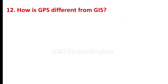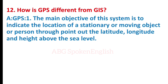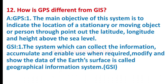How is GPS different from GIS? The main objective of GPS is to indicate the location of a stationary or moving object or person by pointing out the latitude, longitude and height above sea level. GIS is the system which can collect, accumulate and enable use of information when required, modify and show data of the Earth's surface — this is called Geographical Information System.